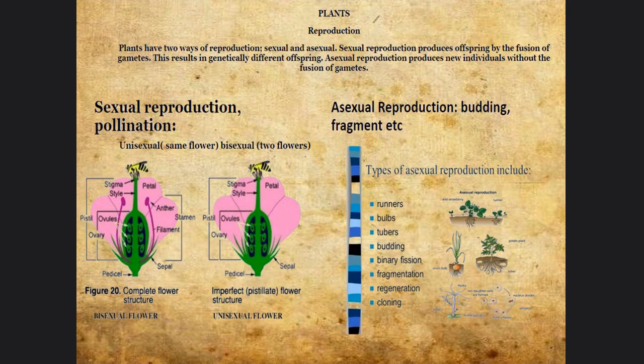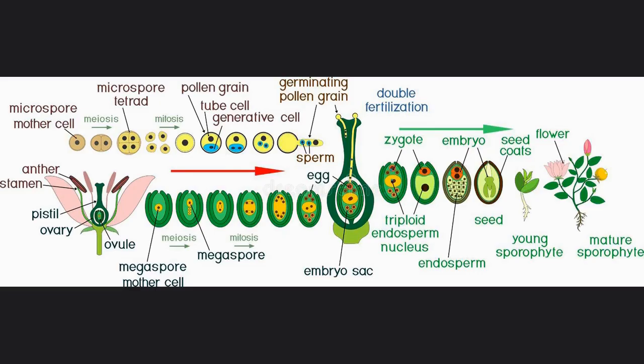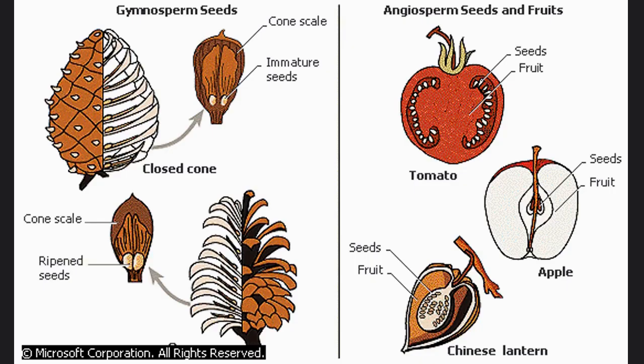We see here in this graphic how the cycle of reproduction works — from fertilization you have the gamete, then the embryo, and from there the seed will then flourish into a flower itself or into a fruit.